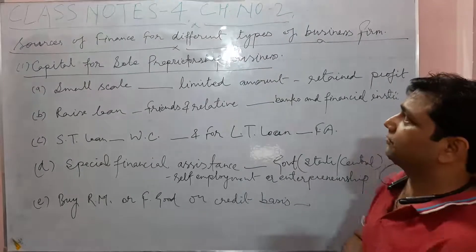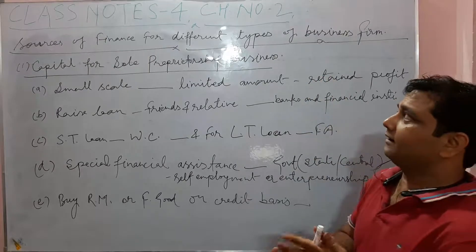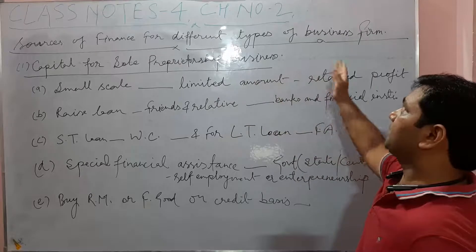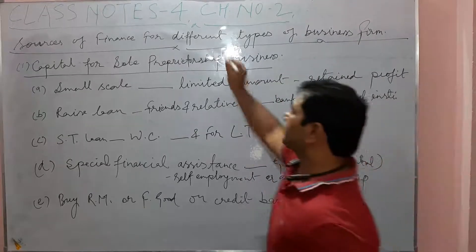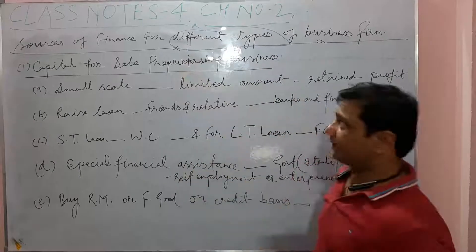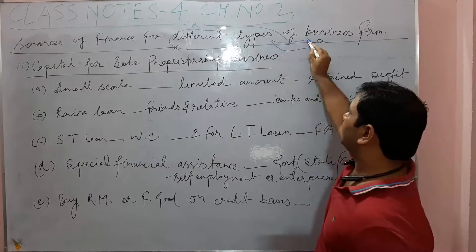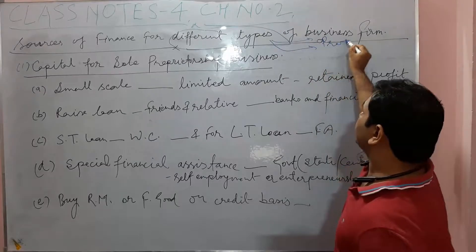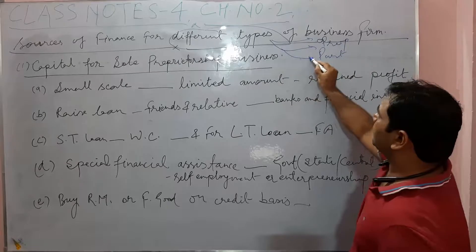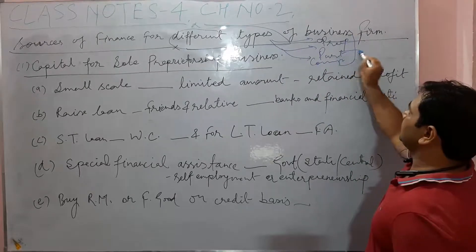Good morning class. Today we are going to study Class 4, Chapter Number 2. In Class 4, there is a topic: sources of finance for different types of business firms. Here we are saying different types of business firms — in our syllabus: proprietorship, partnership, and company. We will only study about these three things.